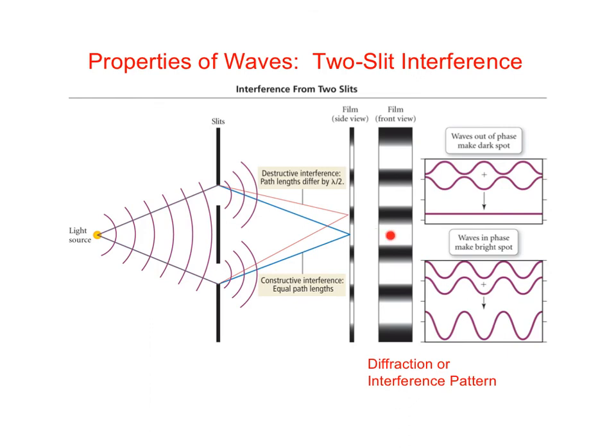If I'm at a point on the screen where the waves are in phase, then they'll interfere constructively and I'll see a bright spot. We see this pattern of alternating dark and bright spots depending on the distances the two waves had to travel to get to the screen. Again, this is something that only waves we would expect to do.